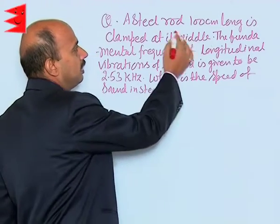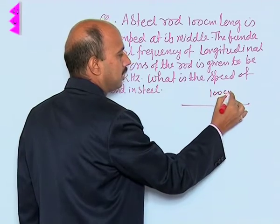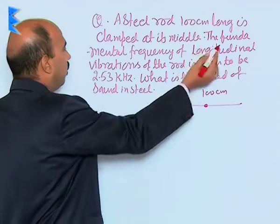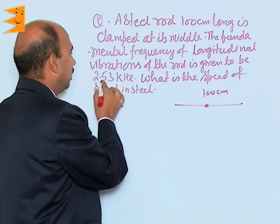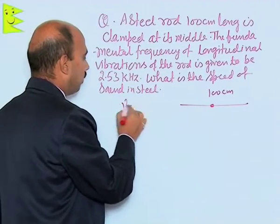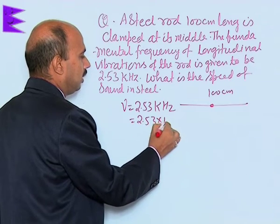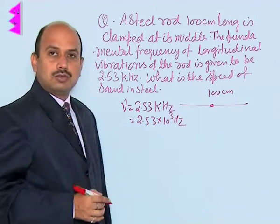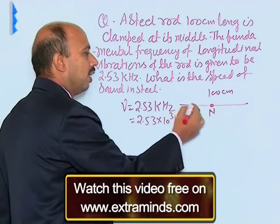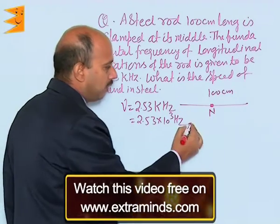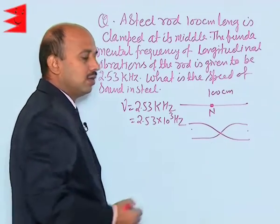A steel rod 100 centimeters long is clamped at its middle. The fundamental frequency of the longitudinal vibrations of the rod is given as 2.53 kilohertz, that is 2.53 into 10 to the power 3 hertz. In the fundamental mode of vibration, when the rod is clamped at the middle, a node is formed at that point and anti-nodes are formed at the ends. So there are two anti-nodes and one node.